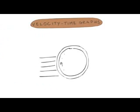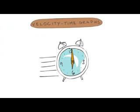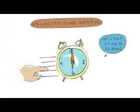Now, on to the second type of graph you need to understand. Velocity time graphs. Yes, those don't look like speed lines, do they? Let's just stick to the science.